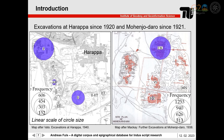Most inscribed artifacts were found at Harappa and Mohenjo-Daro. From these two sites, most of the artifacts are actually coming from three excavation areas: Mounds A and E at Harappa, as well as the DKG area at Mohenjo-Daro.